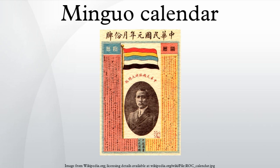Months and days are numbered according to the Gregorian calendar. The ROC calendar begins 1911 years later than the Gregorian calendar, so for example, 2015 minus 1911 equals the 104th year of the Republic.